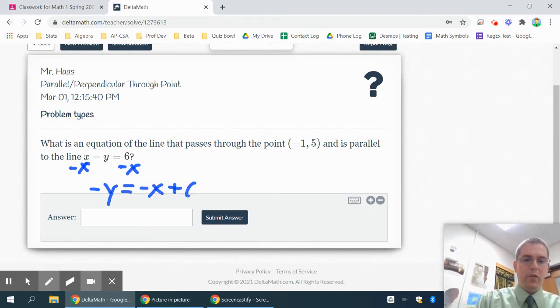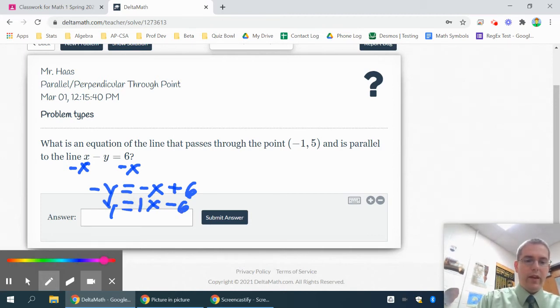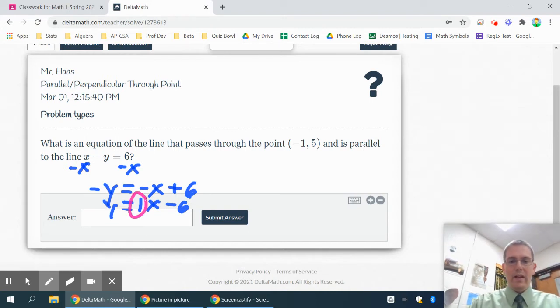Gives me a minus y equals minus x plus 6. Once again, you cannot leave your y negative. So we've got to switch all the signs. y equals positive x minus 6. So the slope of this line is a 1, because that's the understood number in front of the x. And it is parallel. So the parallel slope is also equal to 1. So the slope I'm needing is a 1.